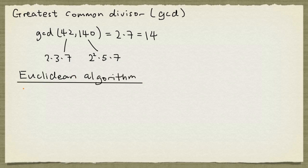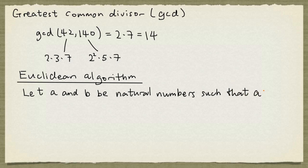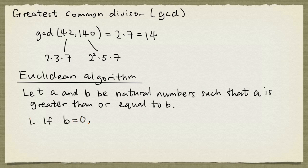So let's take two natural numbers a and b, and we're going to assume that a is greater than or equal to b. The Euclidean algorithm is based on the following observation. If b is 0, then the greatest common divisor of a and b is simply a, because it cannot be larger than a, but a divides a and a divides 0.